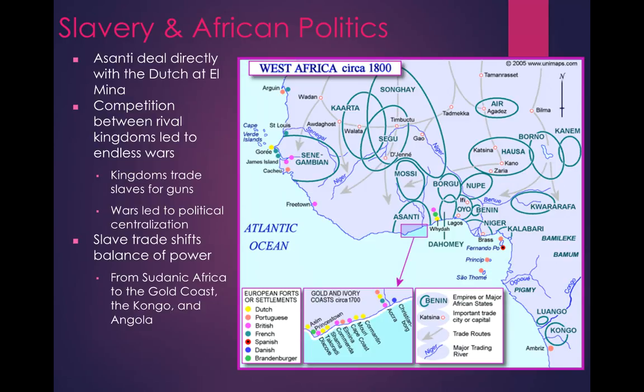Asante dealt directly with the Dutch at Elmina, and competition between rival kingdoms led to endless wars. Kingdoms traded slaves for guns, and wars led to political centralization in Africa. The slave trade shifted the balance of power from Sudanic Africa to the Gold Coast, the Congo, and Angola.